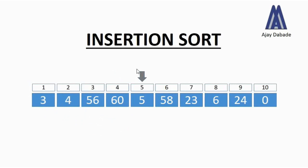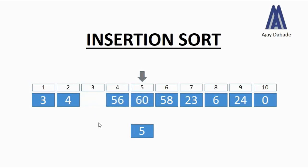The pointer moves to position five, where we have the number 5. We compare it with the left-hand side — with 60, 56, 4, and 3. Now 5 is less than 60 and 56, but it is greater than 4. So we only shift 60 and 56 one position towards the right — we won't shift 3 and 4, they remain in place. After shifting, we place the number 5 at its right position, which is position three.